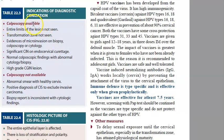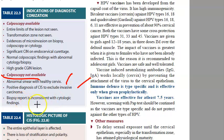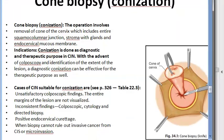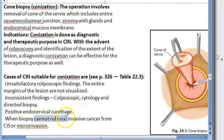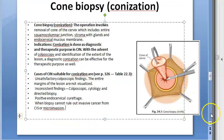The indications for diagnostic conization include: if a colposcope is available but findings are unsatisfactory or inconsistent; if colposcope is not available with an abnormal Pap smear; positive diagnosis of carcinoma in situ to exclude invasive disease; biopsy report inconsistent with cytological findings; or if biopsy cannot rule out invasive cancer.